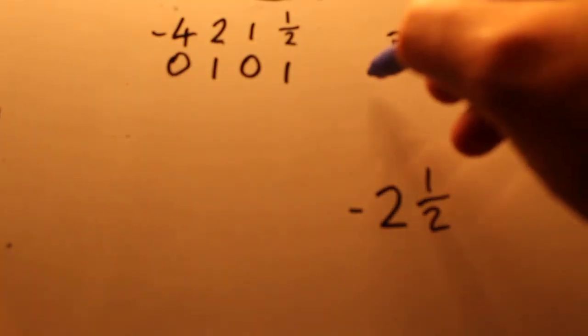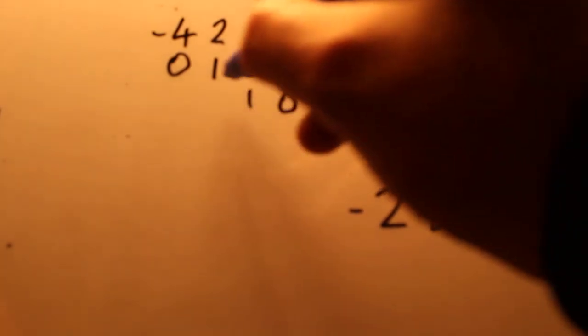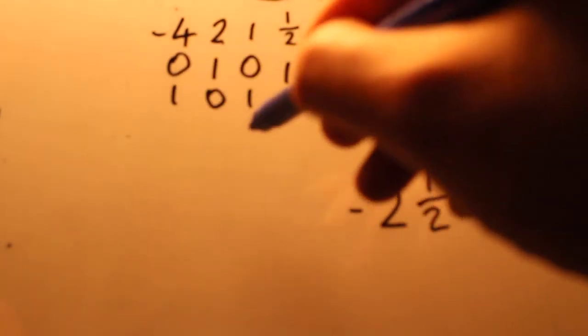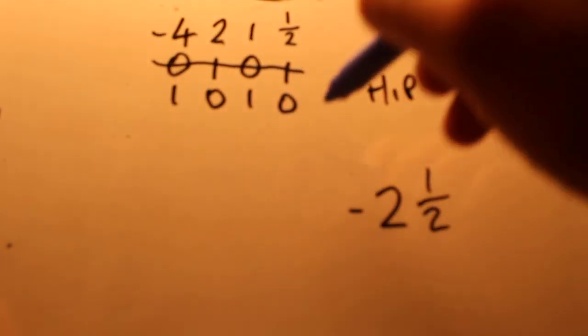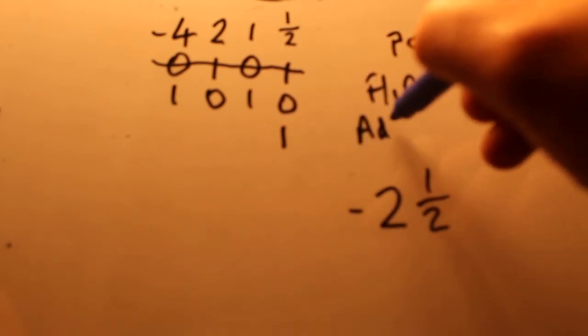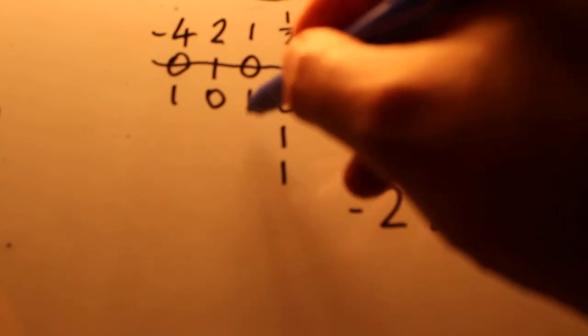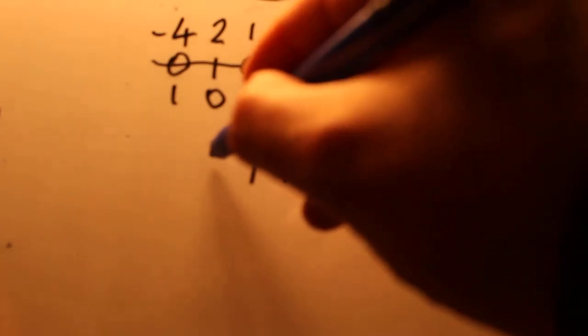Now what I do then is flip the bits so flip them so zero one zero one and then ignoring this top line here I would add one. So simply I would add one to that so one and zero is one, then that's a one, that's a zero and that's a one.